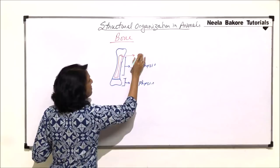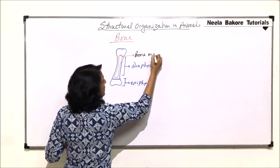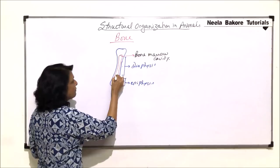In this diaphysis part, there is a cavity. This cavity is known as the bone marrow cavity.